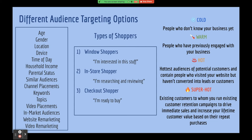People go to Google to research a lot, so they won't always convert the first time. Maybe your Google Ads strategy includes a Google search ad, then a display retargeting ad, and then a video ad if they go to YouTube — three different ads reaching that person based on where they are in the buyer journey cycle.